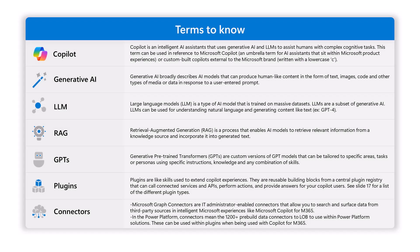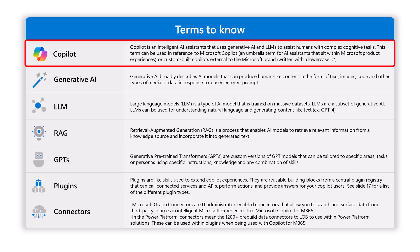Before we get started, let's work together to make sure we get to some common terms that Microsoft uses. One is Copilot — a copilot is basically a conversational app that uses generative AI technology in order to complete its capabilities.